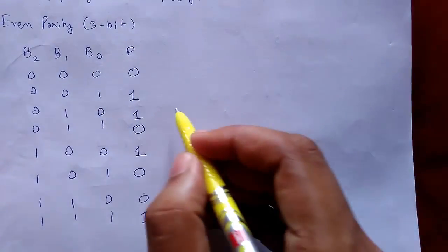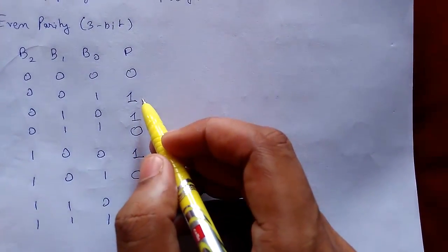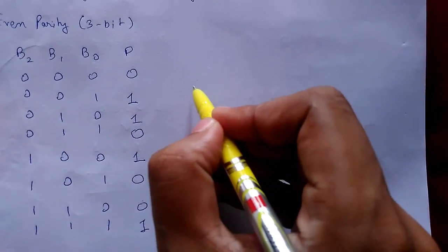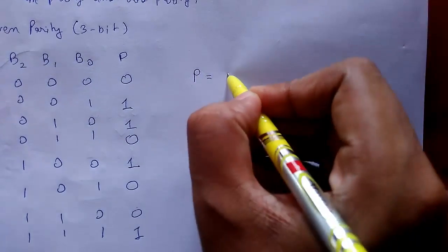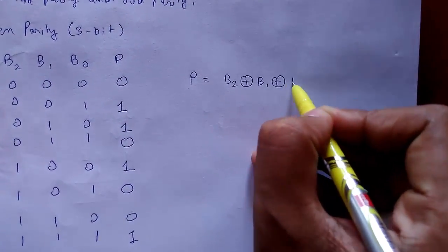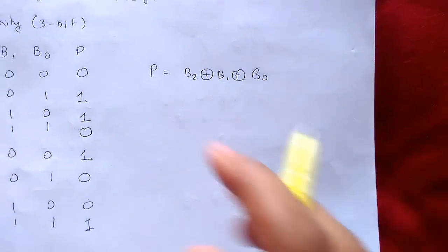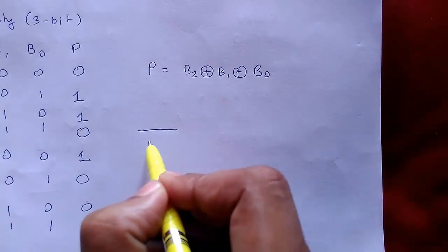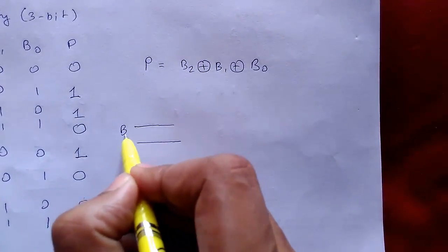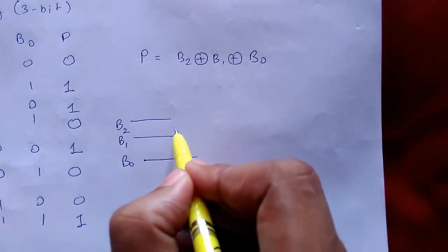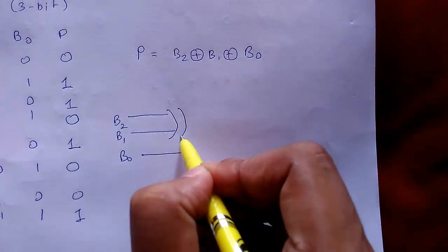Now we'll make a parity circuit for this. The parity will be B2 XOR B1 XOR B0. The circuit will be something like this: suppose for inputs we have B2, B1, and B0. The first two will be XORed together, then that output with B0.